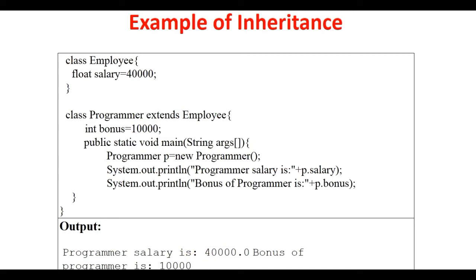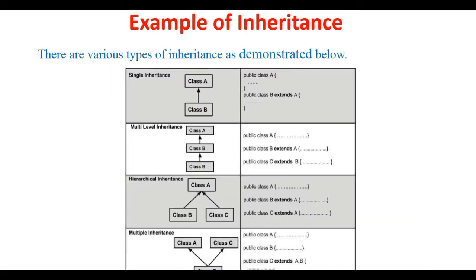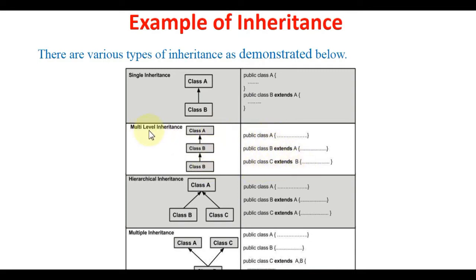Now let's discuss the types of inheritance. There are various types. First, single inheritance — which is what we have been doing so far — where a child class extends one parent class. There is also multi-level inheritance, which is like grandfather, father, and son. There are three classes A, B, and C: class B extends class A, and class C extends class B. This is called multi-level inheritance.